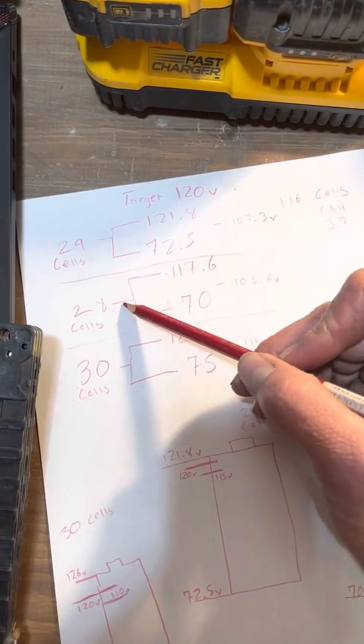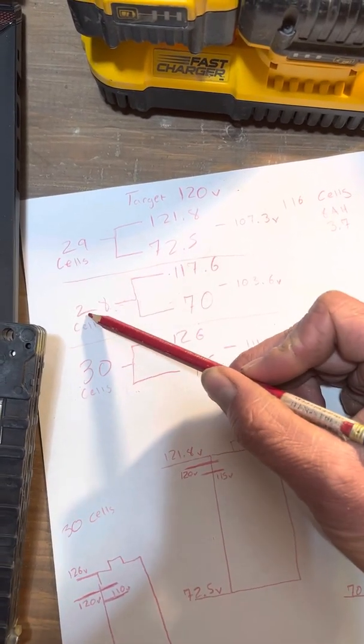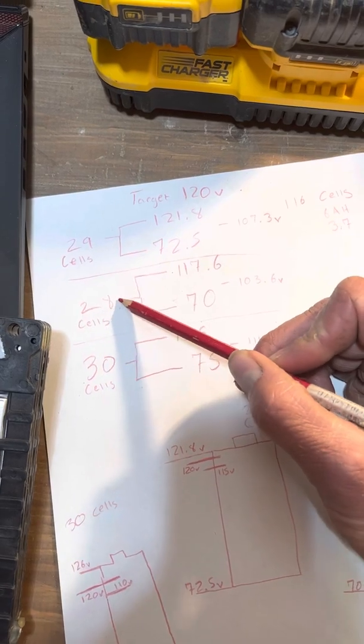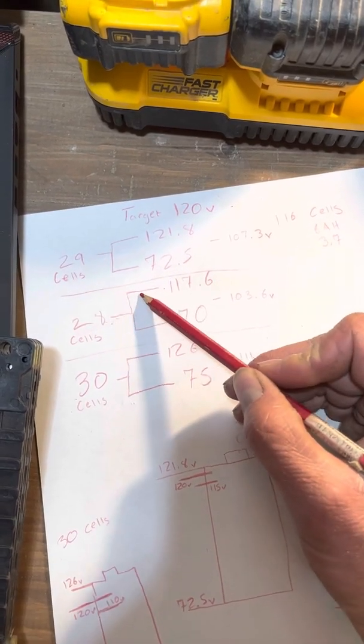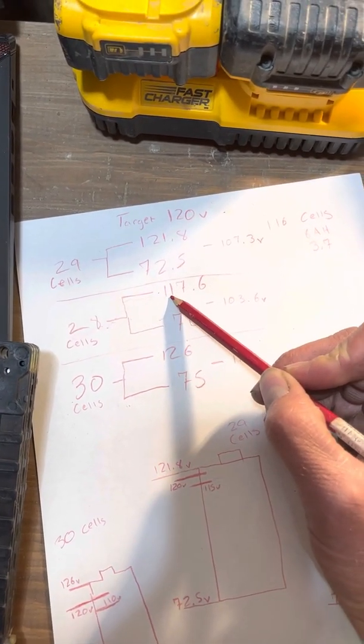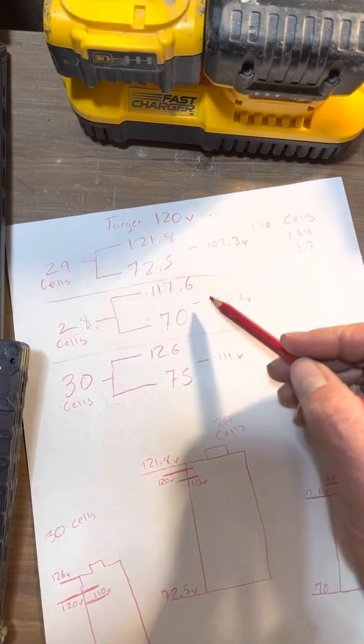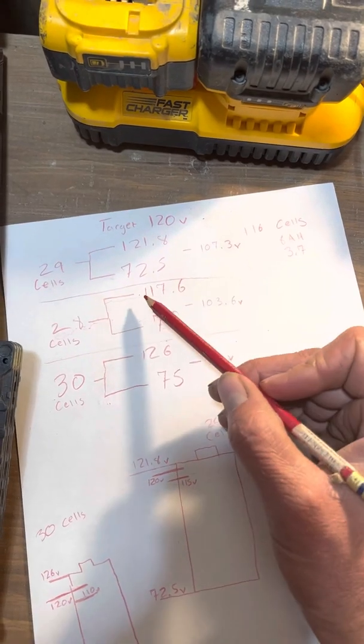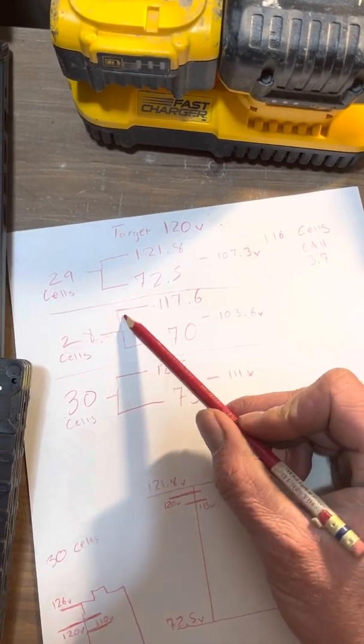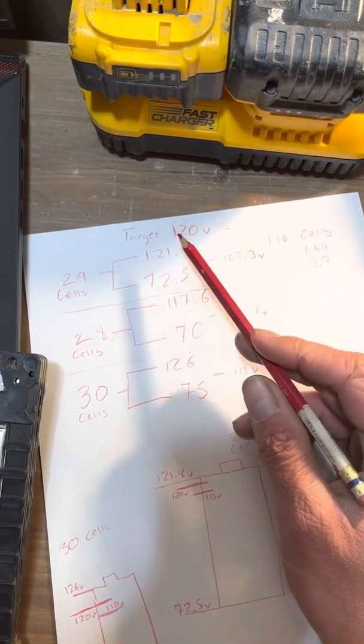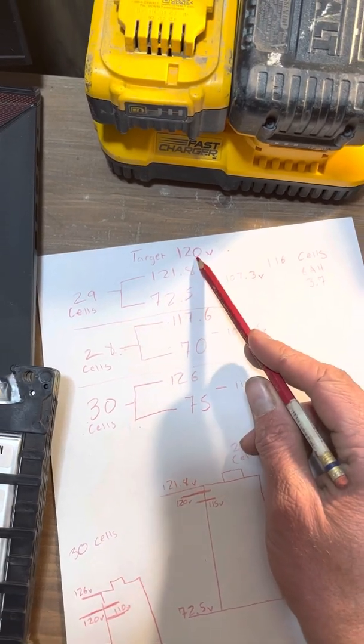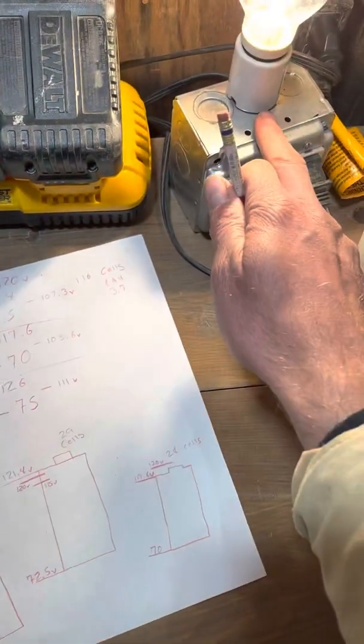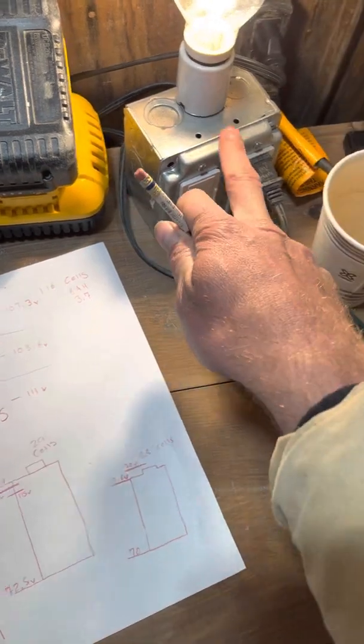So 28 cells, if we would have just stayed there, our top end, our fully charged voltage, would have been 117.6 volts. Our bottom would have been 70. But we're just going to focus on the top end, fully charged,